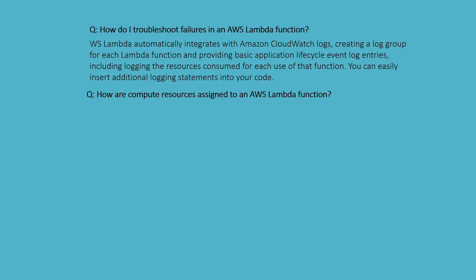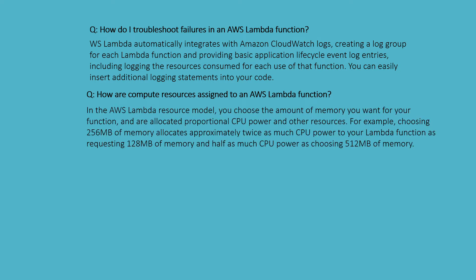How are compute resources assigned to AWS Lambda functions? In the Lambda resource model, you choose the amount of memory you want for your function, and Lambda allocates a proportional amount of CPU power and other resources. For example, choosing 256 MB of memory allocates approximately twice as much CPU power as 128 MB, and choosing 512 MB allocates twice as much CPU power as 256 MB.